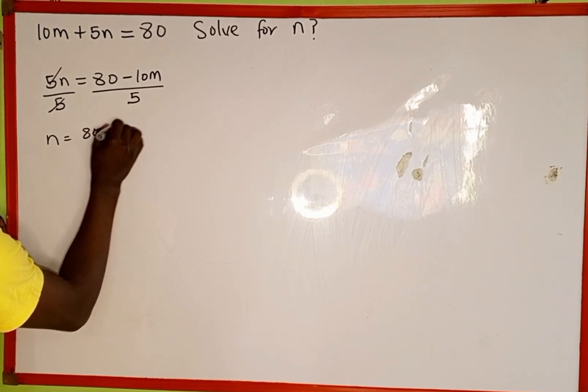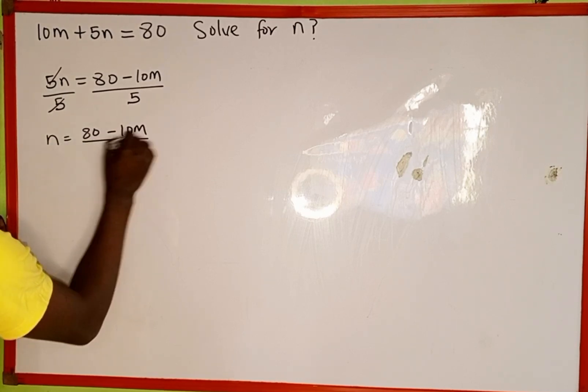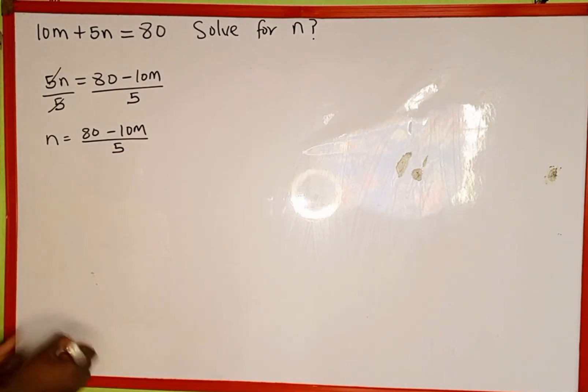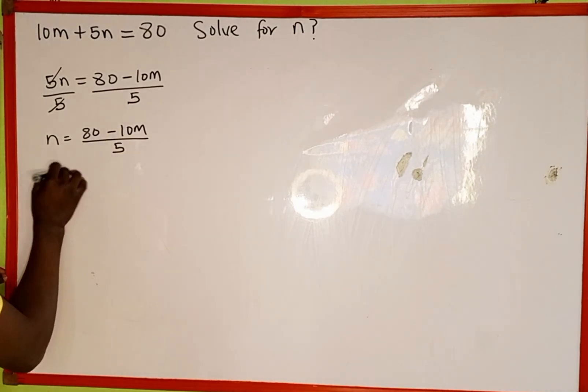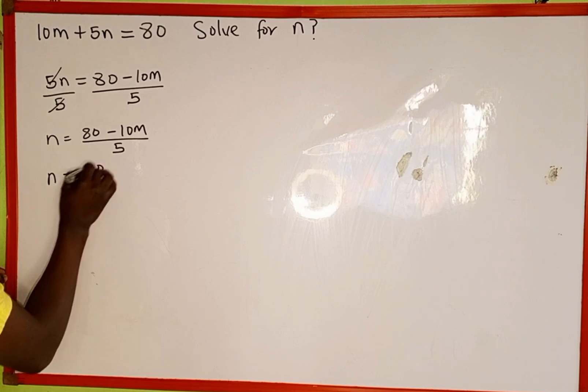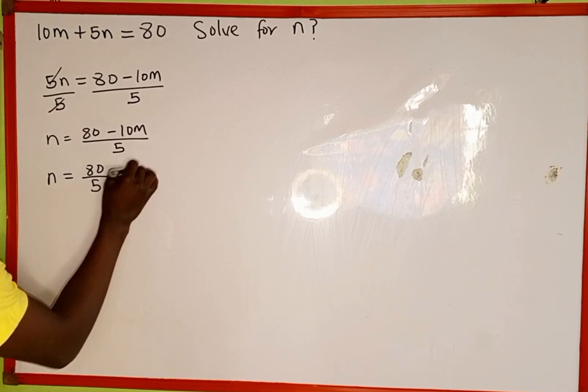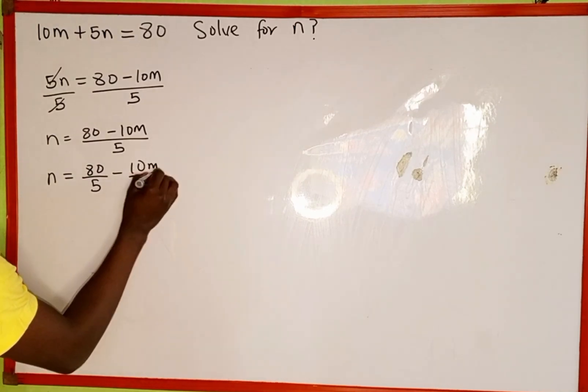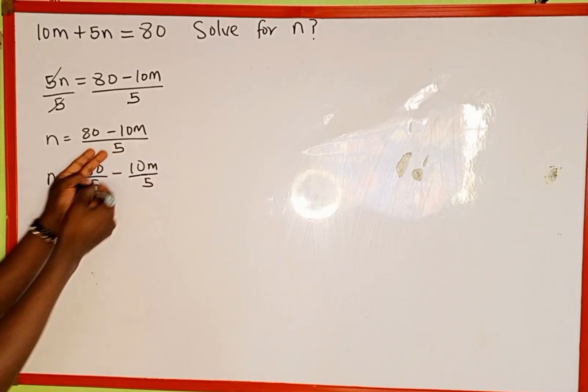n will now be equal to 80 minus 10m, then divided by 5. We can simplify this: n is equal to 80 divided by 5 minus 10m divided by 5. We can share the denominator.